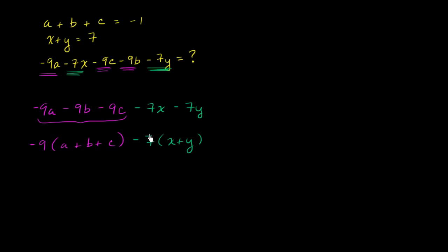And just to verify, if you wanted to go the other way, multiply this negative 7 times (x plus y), you'll get this. Multiply a negative 9 times (a plus b plus c), distribute it, you'll get this right over here. And so this makes it a little bit clearer.